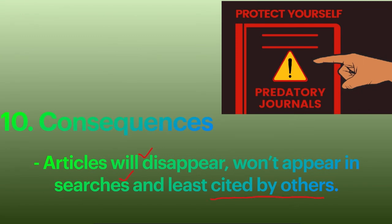As already mentioned, these journals have a spectrum — not all 10 points I have mentioned may be present, but most of them may be fulfilled. It is our duty to identify predatory journals and protect ourselves from publishing in them.